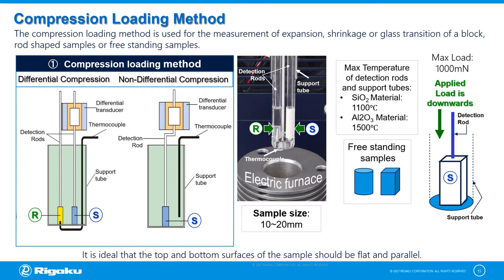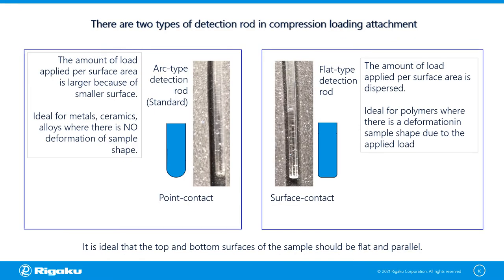When performing measurements, it is ideal that the top and bottom of the sample should be flat and parallel. In the compression loading attachment, there are two types of detection rods. The R-type detection rod is standard; the amount of load applied per surface is larger because of a smaller contact surface, making it ideal for metals, ceramics, and alloys where there is no deformation of sample shape. On the other hand, the flat type detection rod is ideal for materials such as polymers where there is deformation of sample shape due to the applied load, as it disperses the load per surface area.